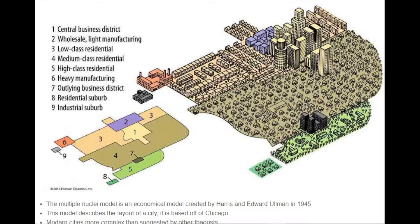Medium-class residential areas tend to be closer to the CBD and have more space to expand for a growing population with more skilled jobs. Higher-class residential areas tend to be on the outer scope of the medium-class residential areas. These areas also touch the outlying business district, where the jobs performed are usually skilled labor with high incomes.